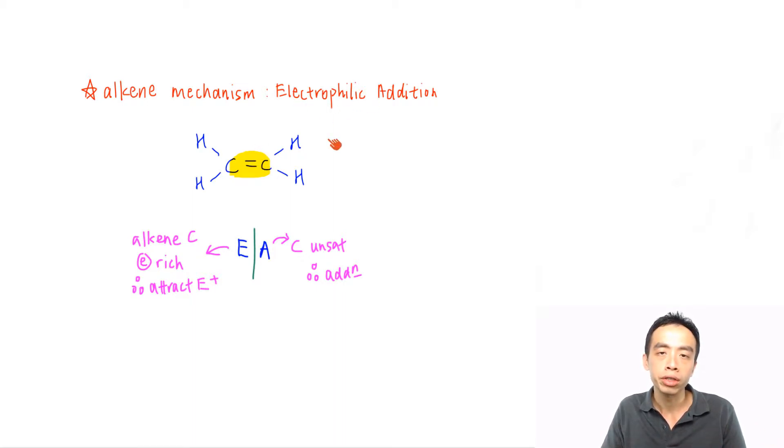Now why alkene undergoes addition reaction is also fairly easy to deduce. Because my carbon is unsaturated, and because it's unsaturated, so therefore it can undergo addition reaction without losing any species.